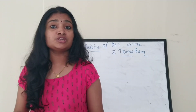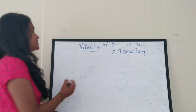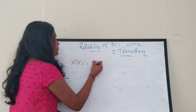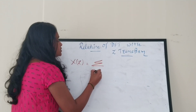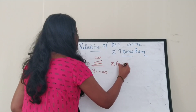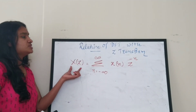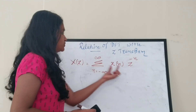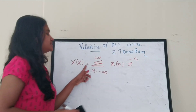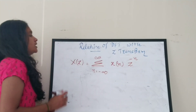So let's see. First let's write the equation for the Z-transform: X(z) = Σ from n = −∞ to ∞ of x(n) · z^(−n). This is the relationship of X(z) with x(n), where x(n) is your input. If you want to find the Z-transform of x(n), it is given as X(z) = Σ from n = −∞ to ∞ of x(n) · z^(−n).